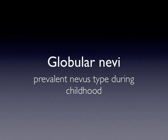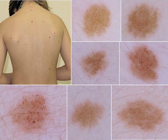Globular nevi are the prevalent nevus type during childhood. And if we look at the child, like here in the image, and we look at all her nevi, we realize that all nevi show a globular pattern.